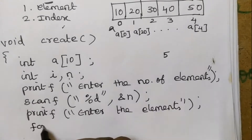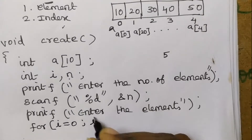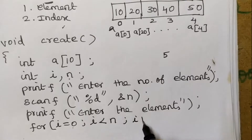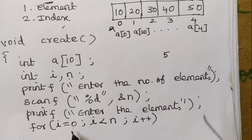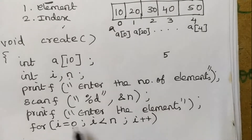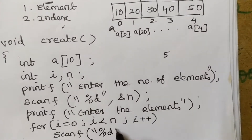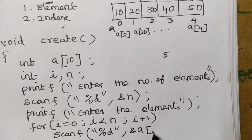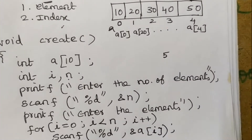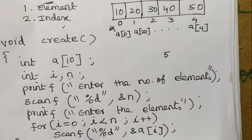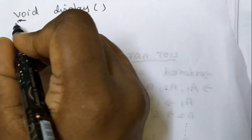To get the other elements we use a for loop: for i = 0, i less than n, i++. If n is 5, we need to get 5 elements from the user. Inside the loop we write the scanf statement to get values from the user: scanf("%d", &a[i]). If we give 5, all 5 elements can be inserted into the array. This is the create procedure.